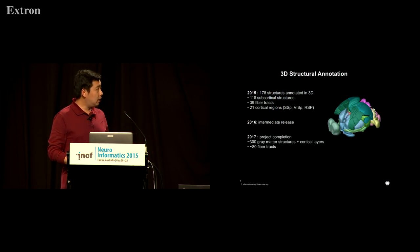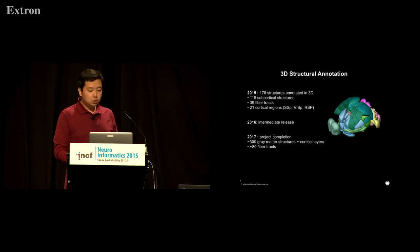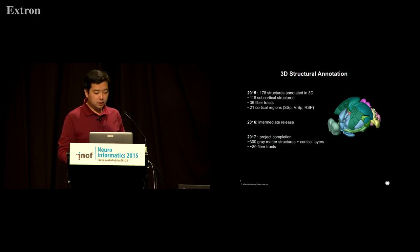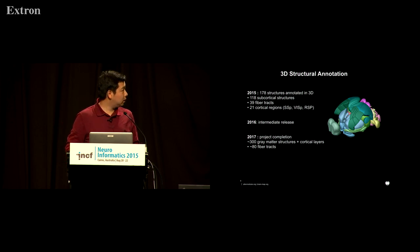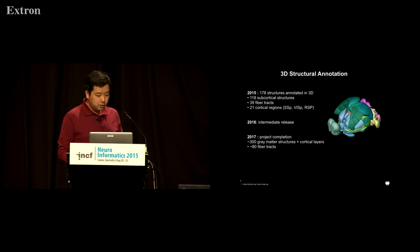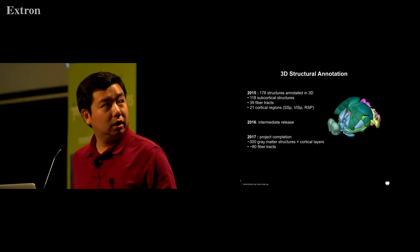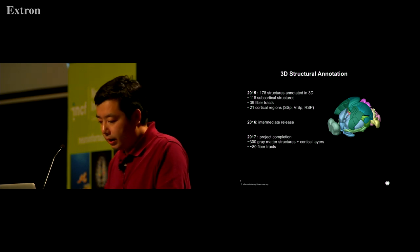Data annotation is another very important aspect of the CCF. Currently we are in the first year of a four-year plan to annotate the whole atlas. For each structure, annotation is led by our neuroanatomists. They use not only the information from the average template, but also supplementary information such as gene expression and connectivity information to determine boundaries. So far, 178 structures have been annotated, and when completed in 2017, we are going to have 300 gray matter structures and cortical layers, plus another 80 fiber tracts.